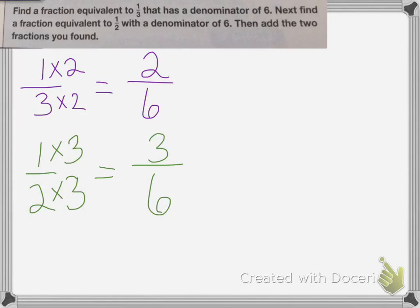The last part of this problem says to add the two fractions you found. So 2 sixths plus 3 sixths is equal to 5 sixths.